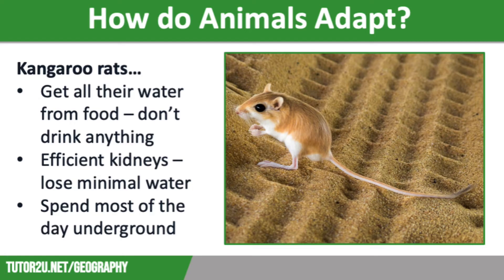Let's move on to having a look at how animals adapt to the conditions in hot deserts. Despite the harsh conditions, there are many species of animals who have adapted to survive the hostile hot desert environment. For example, many rodents are nocturnal and they only venture out during the cool nights, spending much of their days underground in burrows. We also have plenty of snakes and lizards who are able to retain as much water as possible through their waterproof skin.